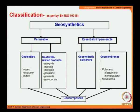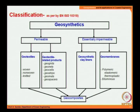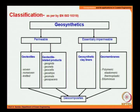Regarding geomembranes, you have either polymeric or bituminous types. When all these products are combined together, they are called geocomposites. Geotextiles and geotextile-related products can be combined together, or geosynthetic clay liners can be combined with geotextile products. Any of these classifications or sub-classifications combined together produces a geocomposite.